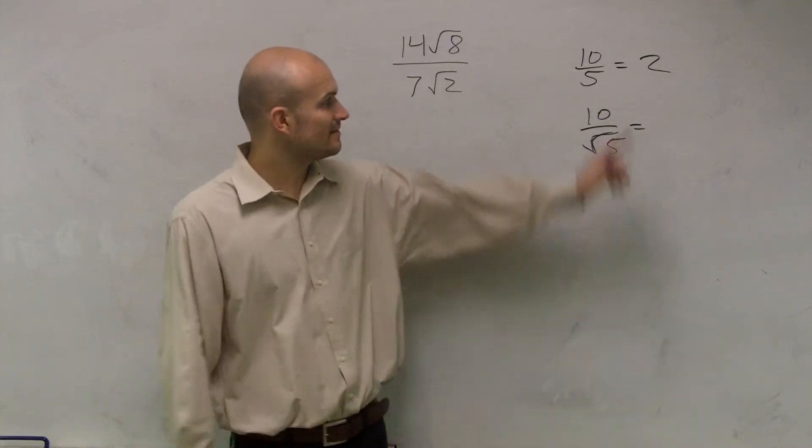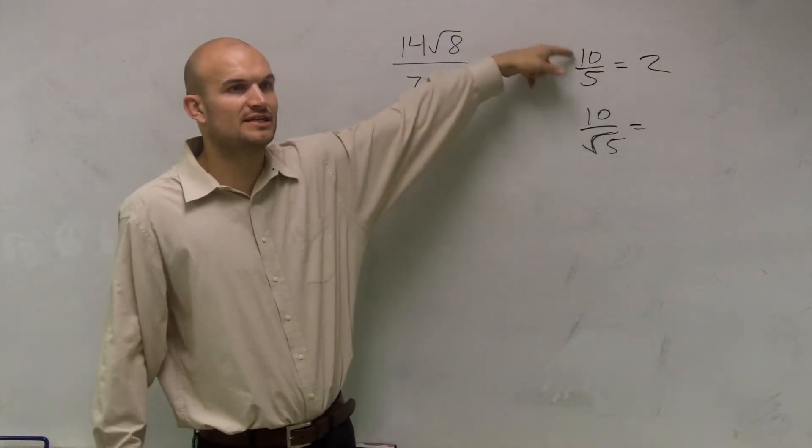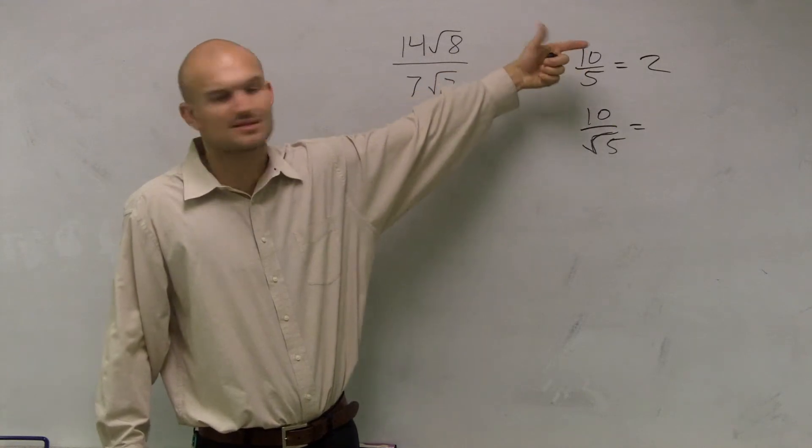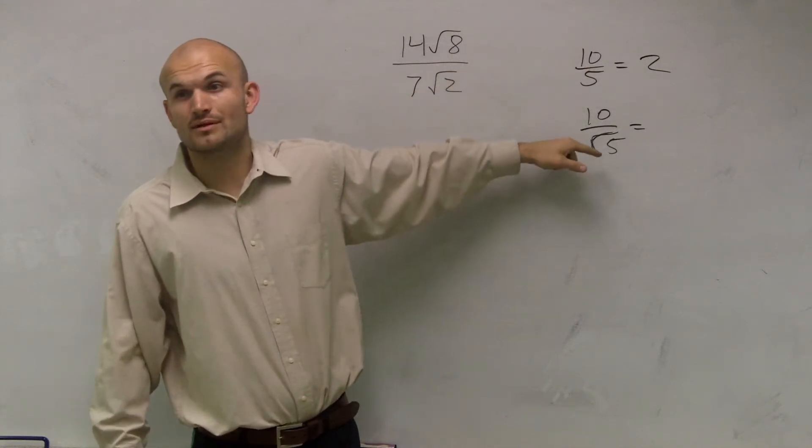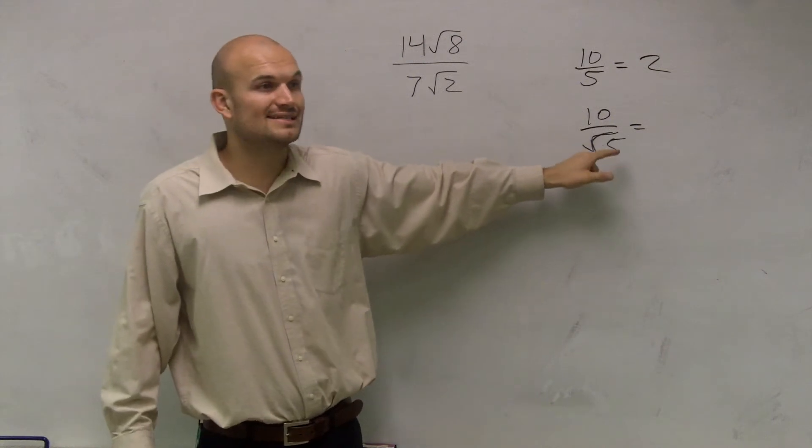One thing I want you guys to understand is, this makes sense because five evenly divides into ten, right? Makes sense. Square root of five, that's actually a decimal, okay? Even worse than a decimal, that's a decimal that goes on and on and on forever.